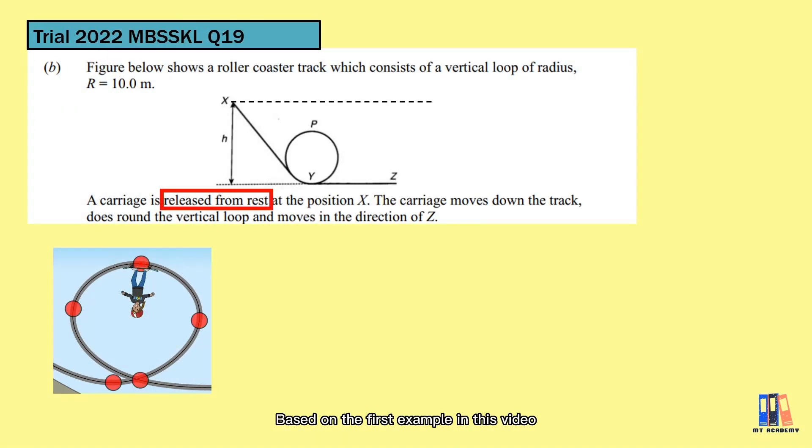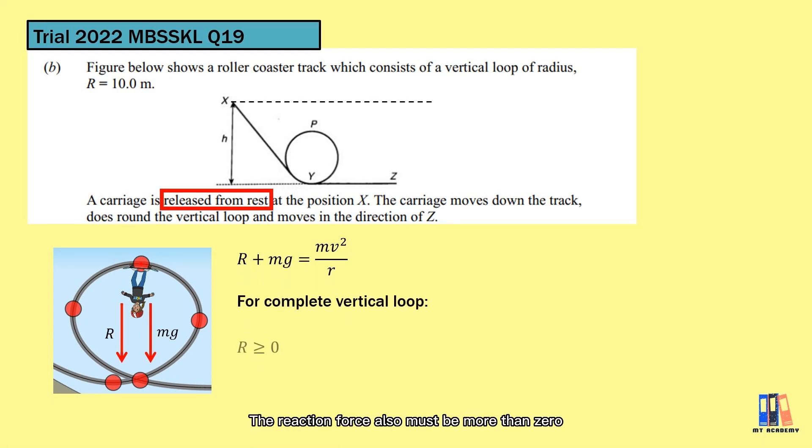Based on the first example in this video, we have learned how to obtain the minimum required velocity. Here, we have the reaction force between the object and the track instead of the tension. The reaction force also must be more than zero. So, doing the same calculation steps here, you can get the minimum velocity is 9.9 meters per second.